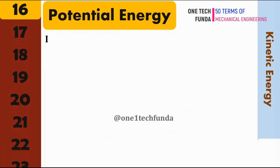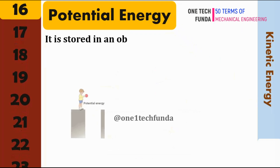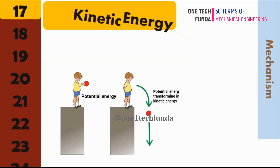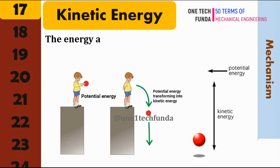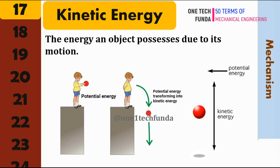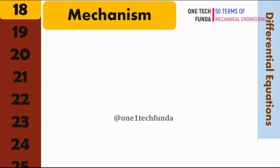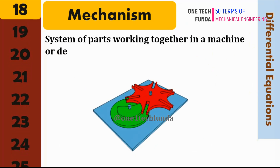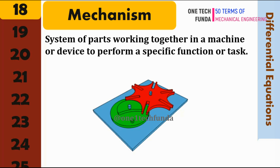Potential Energy: the energy that is stored in an object or system due to its position, condition, or configuration. Kinetic Energy: the energy an object possesses due to its motion. Mechanism: refers to a system of parts working together in a machine or device to perform a specific function or task.